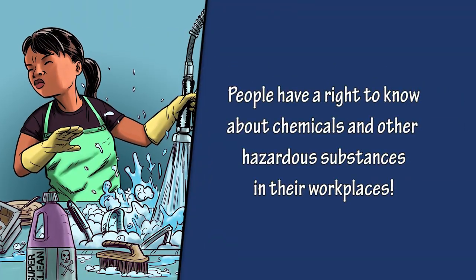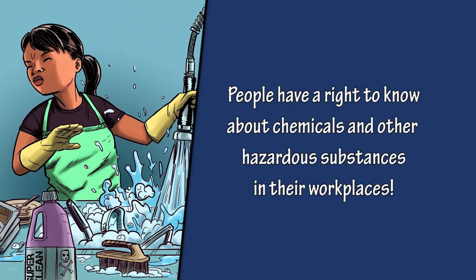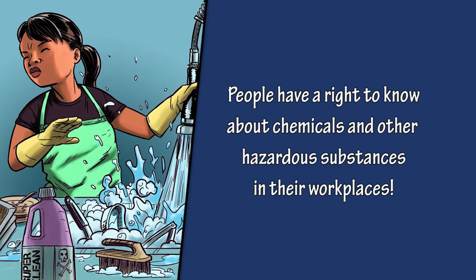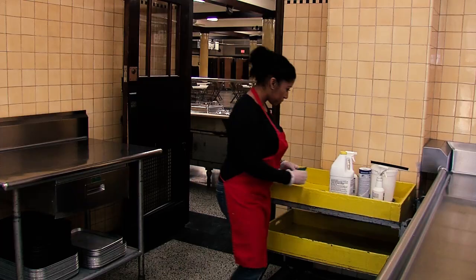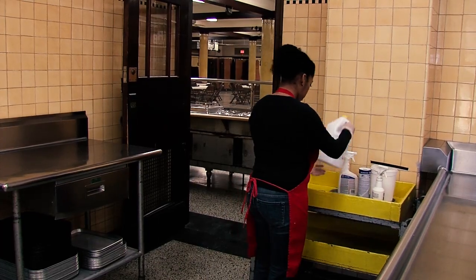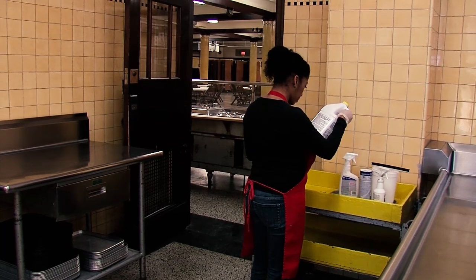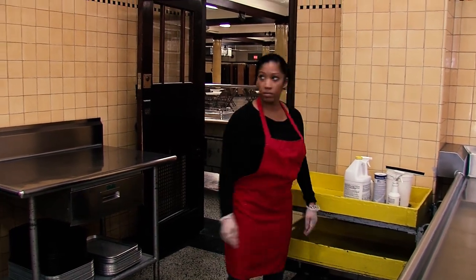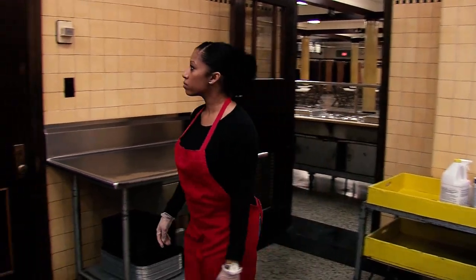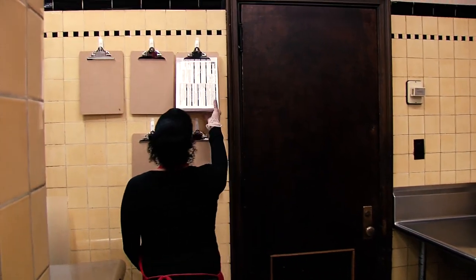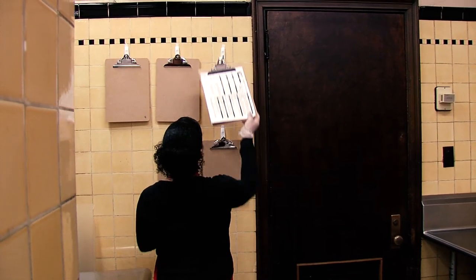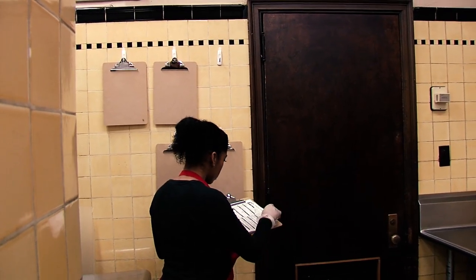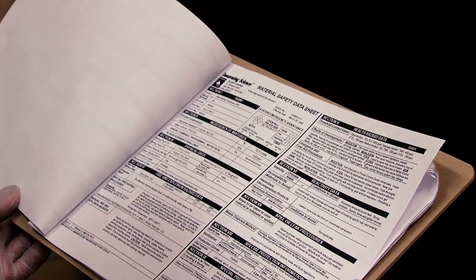You have a right to know about chemicals and other hazardous substances used in your workplace. When using a new chemical, it's important to read labels and check the SDS — Safety Data Sheet — for the product. An SDS tells you what's in a chemical product, how it can harm you, and how to protect yourself.